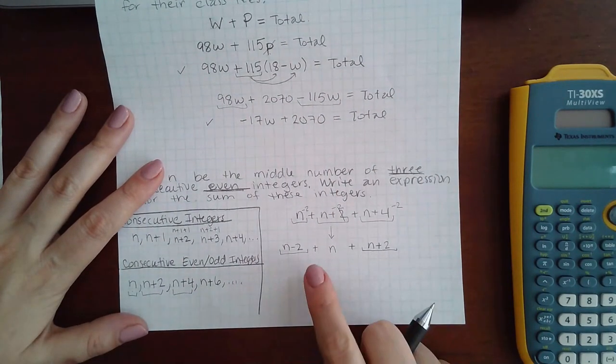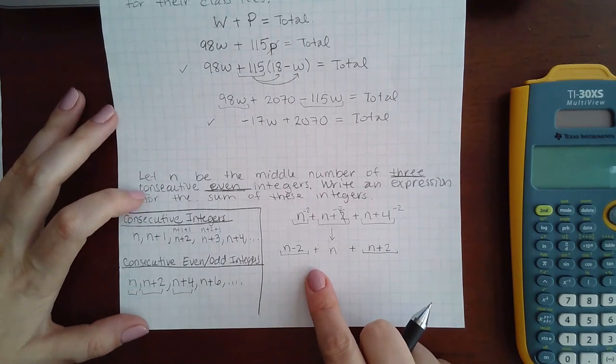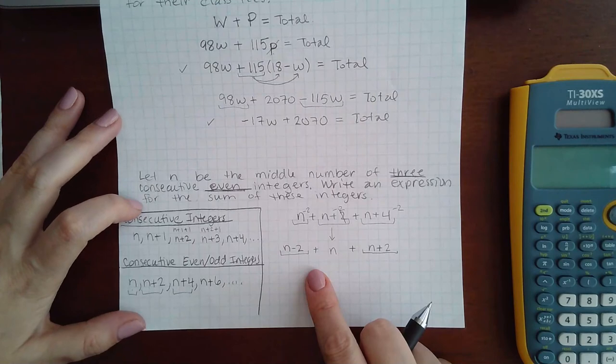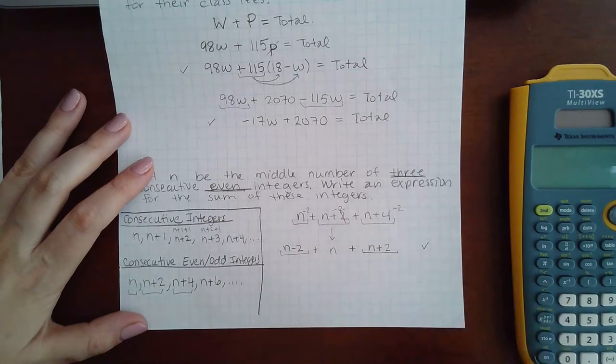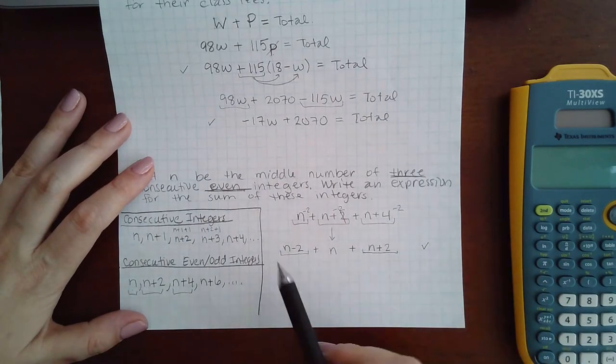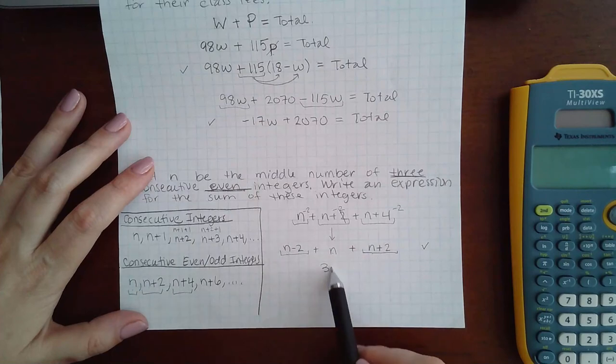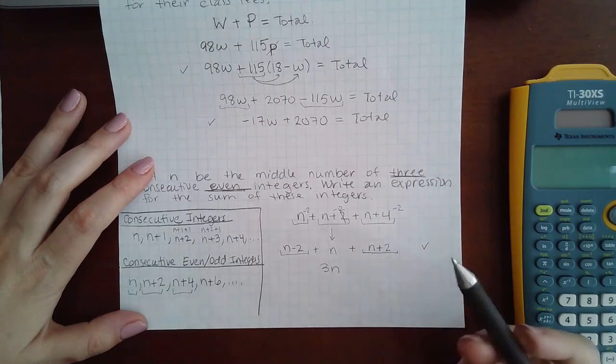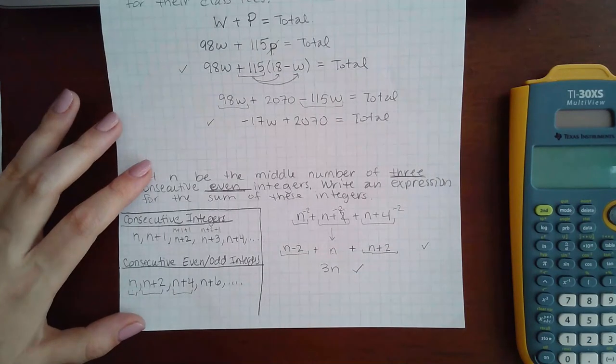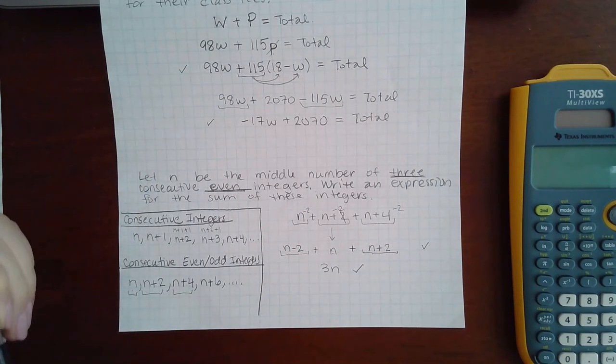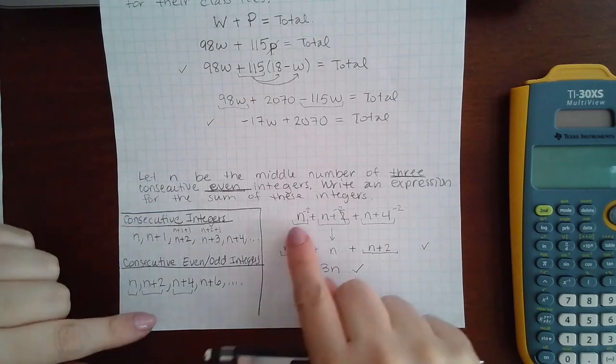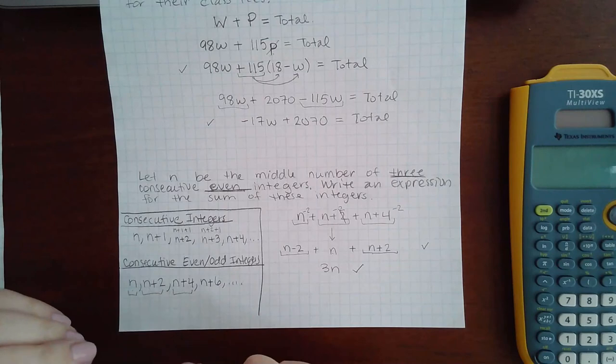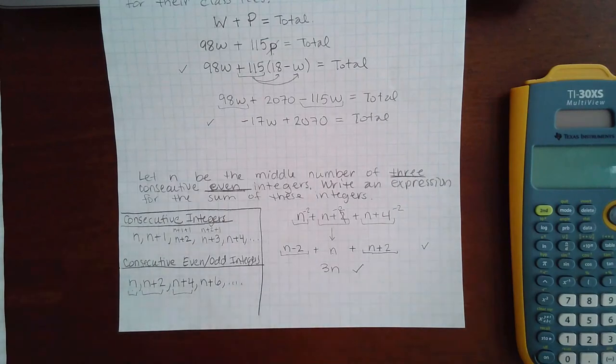Now it says write an expression for the sum of these integers. This would be accepted by ALEKS, but they may also combine the like terms. So n plus n plus n is 3n, and negative two plus two would actually cancel each other out. So the simplified expression they would also accept is just 3n. This one was very tricky. We had some new information and we had to manipulate that information in order to come up with the expression that they wanted.